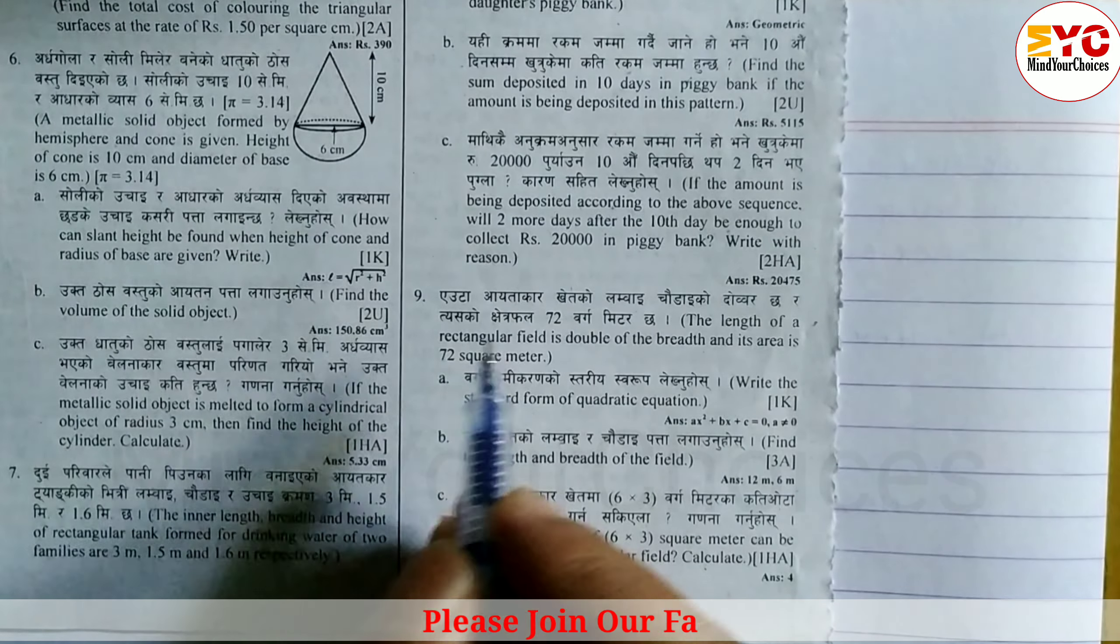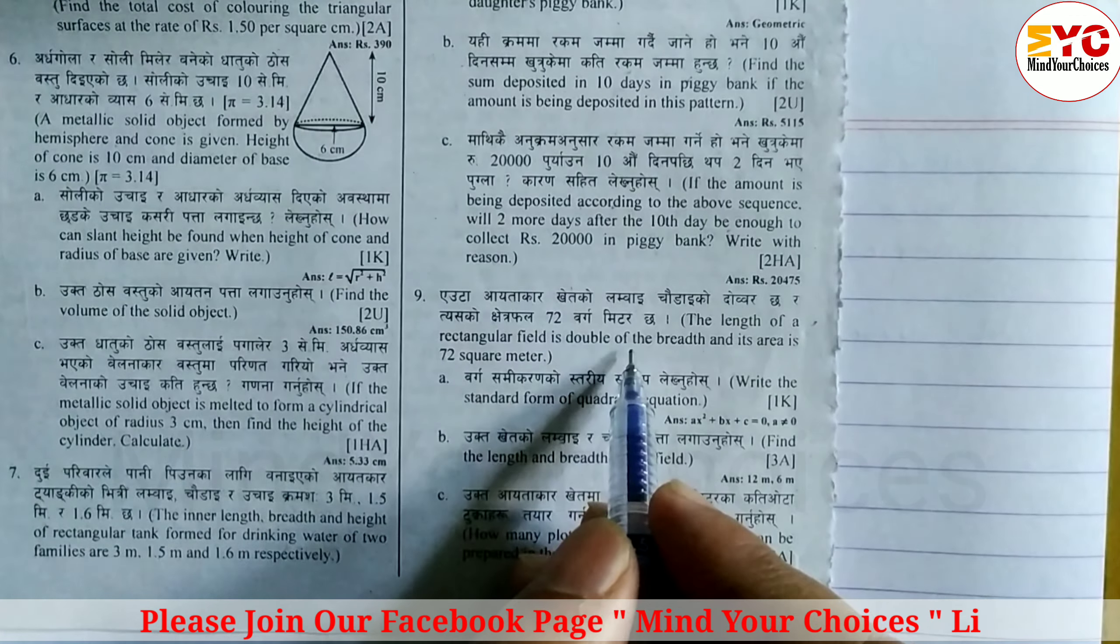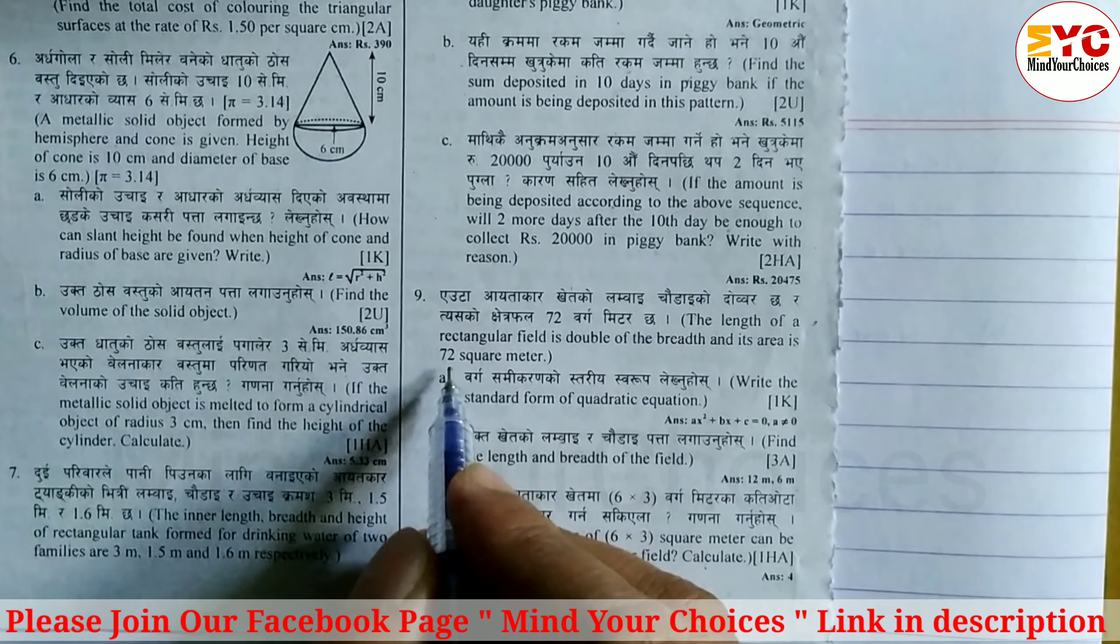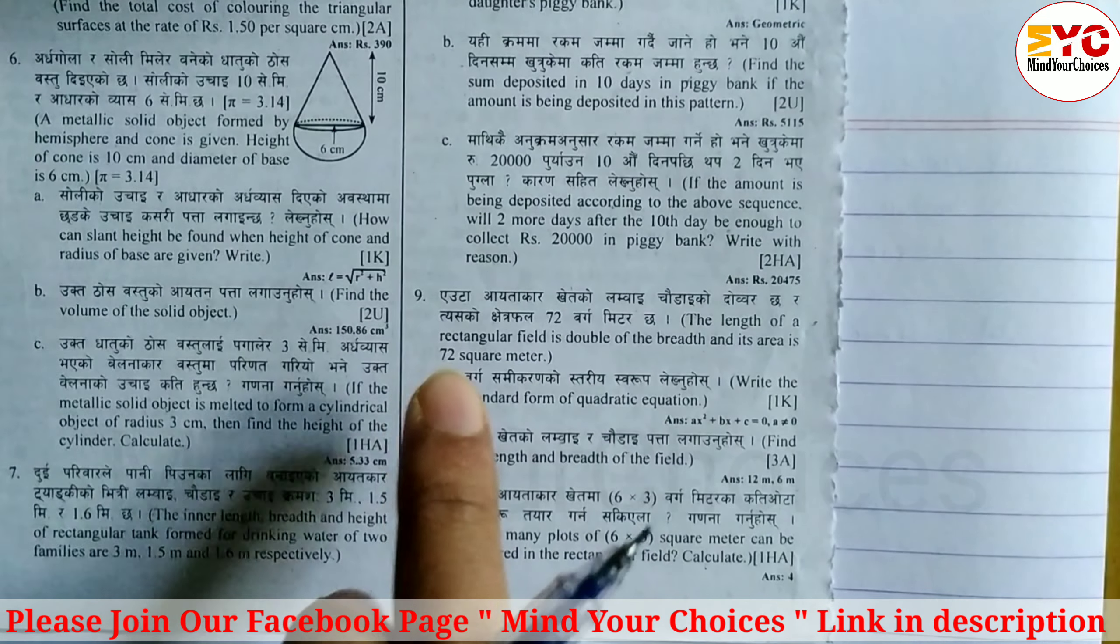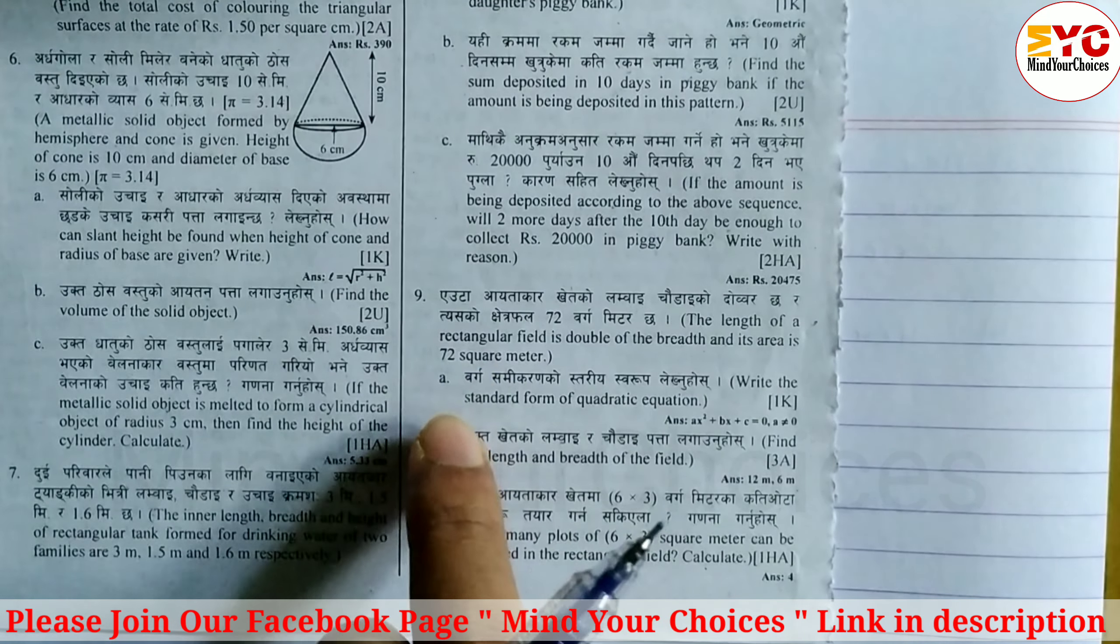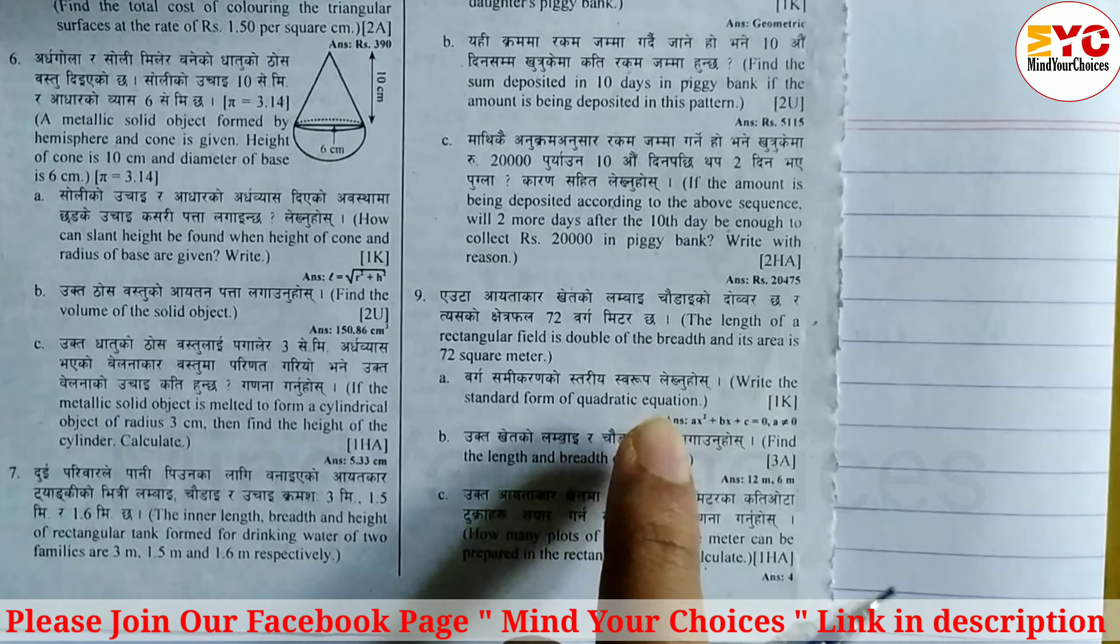Question number 9: The length of the rectangular field is double of its breadth and its area is 72 square meter. Length double breadth is 72 square meter. Number A: Write the standard form of quadratic equation.